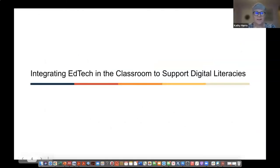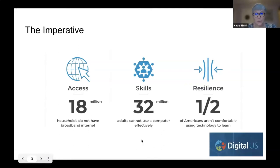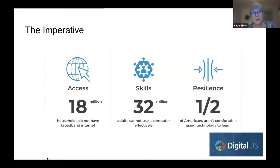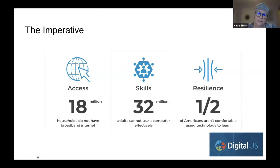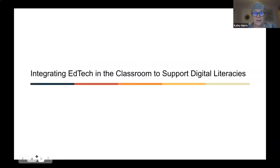So the imperative: why is this so important? Well, 18 million households do not have broadband Internet access — they don't have always-on, higher-than-dial-up access. And if you break that apart by level of education or race or ethnicity, the statistic is even more dire. 32 million adults cannot use a computer effectively to do the things they need to be successful and meet their goals. Half of Americans don't have enough comfort and confidence in their technology skills to continue to learn, meaning as technology evolves, people don't have the skills to keep up.